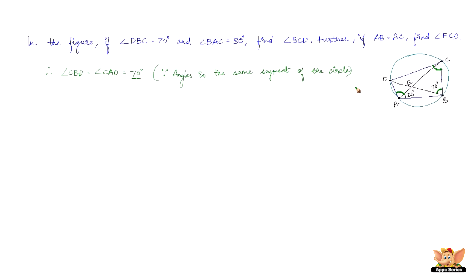Angle BAD equals angle BAC plus angle CAD. Angle BAC is 30 degrees and angle CAD is 70 degrees, so angle BAD equals 100 degrees. The opposite pair in the cyclic quadrilateral is angle A and angle C. Since we need angle BCD, and 100 plus something equals 180 degrees, angle BCD equals 80 degrees.